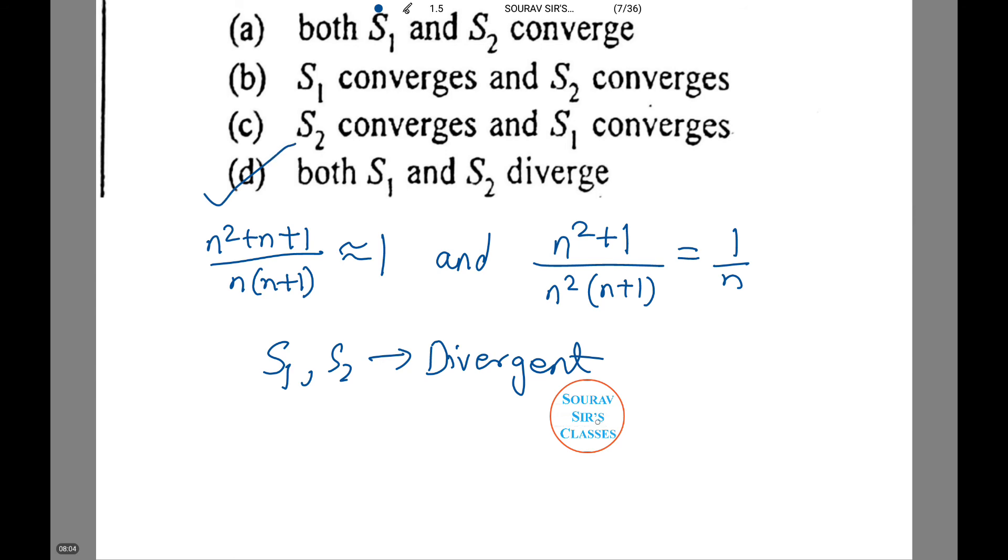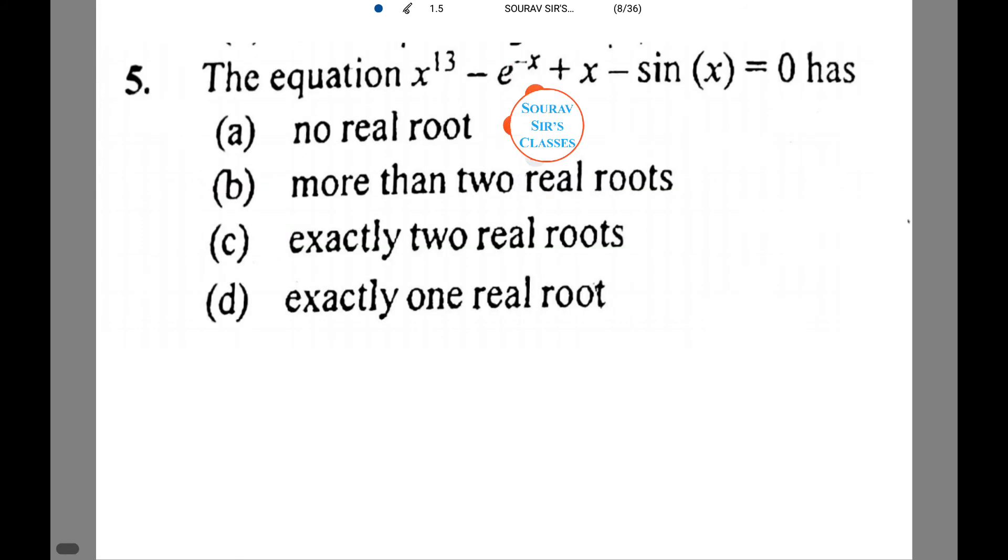Now, we are given an equation x to the power 13 minus e to the power minus x plus x minus sin x equals 0. Let's find the root of this question. Let this equation be equal to f(x).